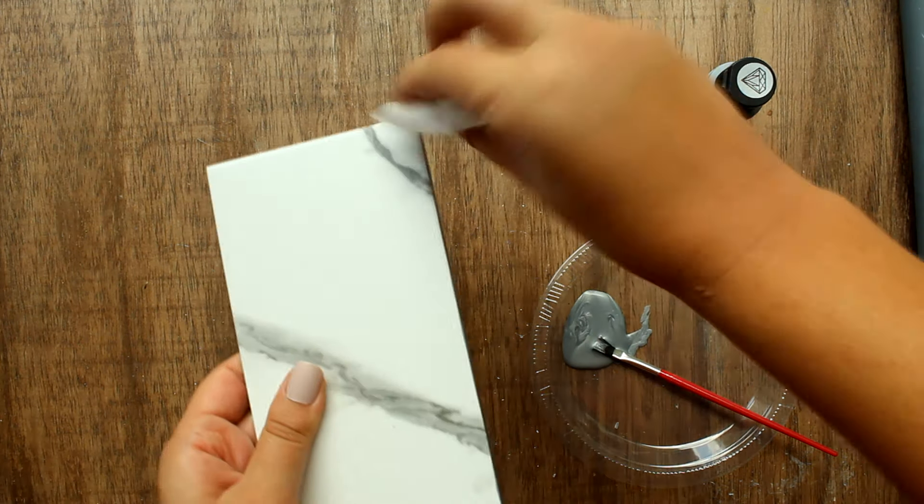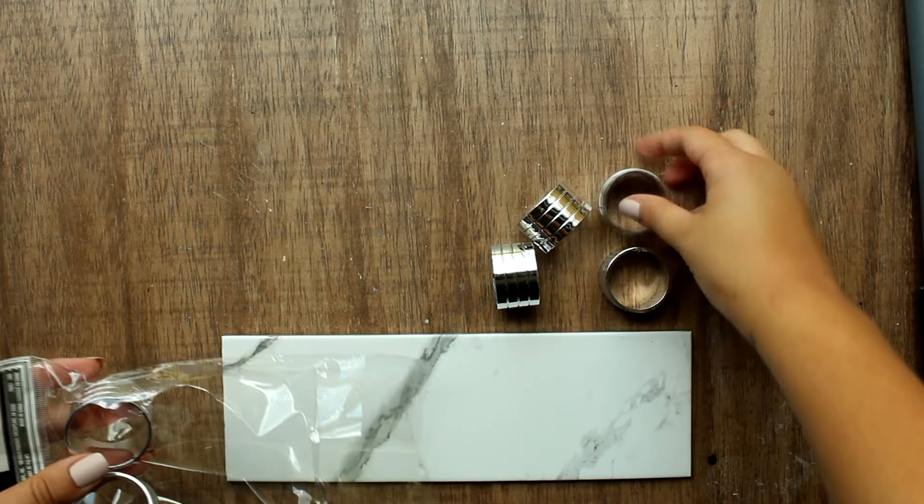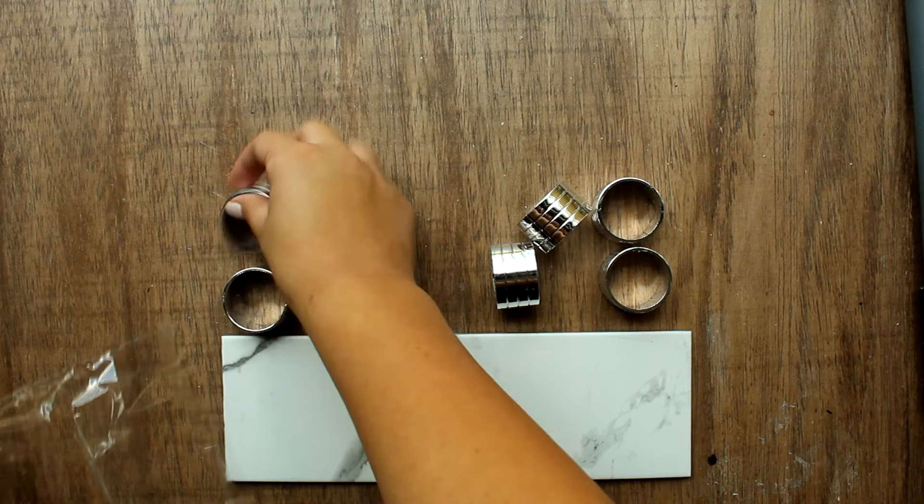Afterwards I wiped off the excess paint with a little wipe. Then I took these napkin rings from the Dollar Tree and glued four to the bottom to create feet for the tray.